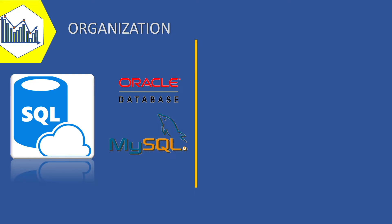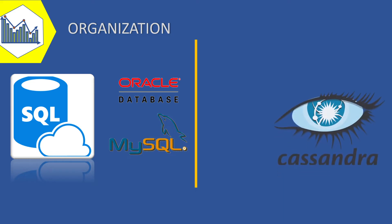Big data uses a dynamic schema for storage. Big data is raw and unstructured when stored, and the dynamic schema is applied to the raw data when it is accessed. Modern non-relational or NoSQL databases like Cassandra and MongoDB are ideal for unstructured data, given the way they store data in files.